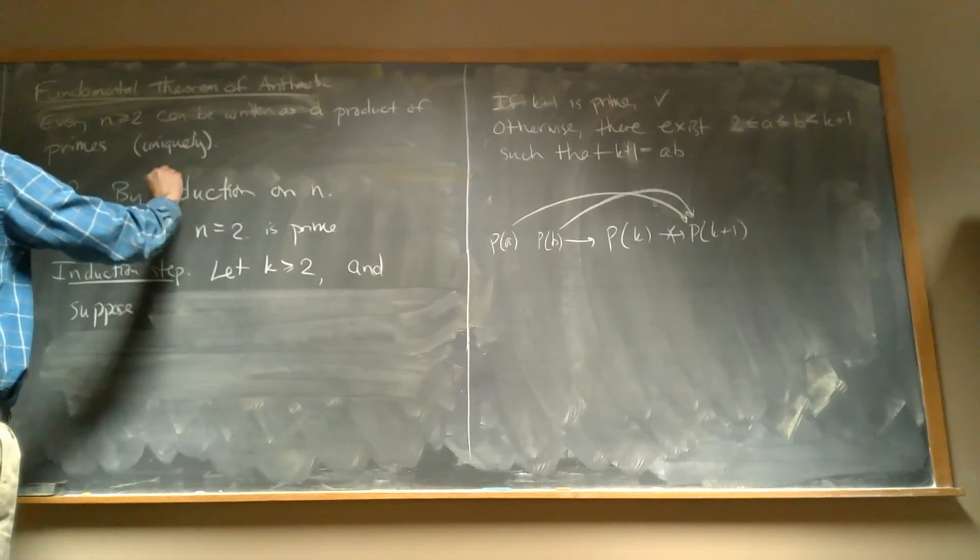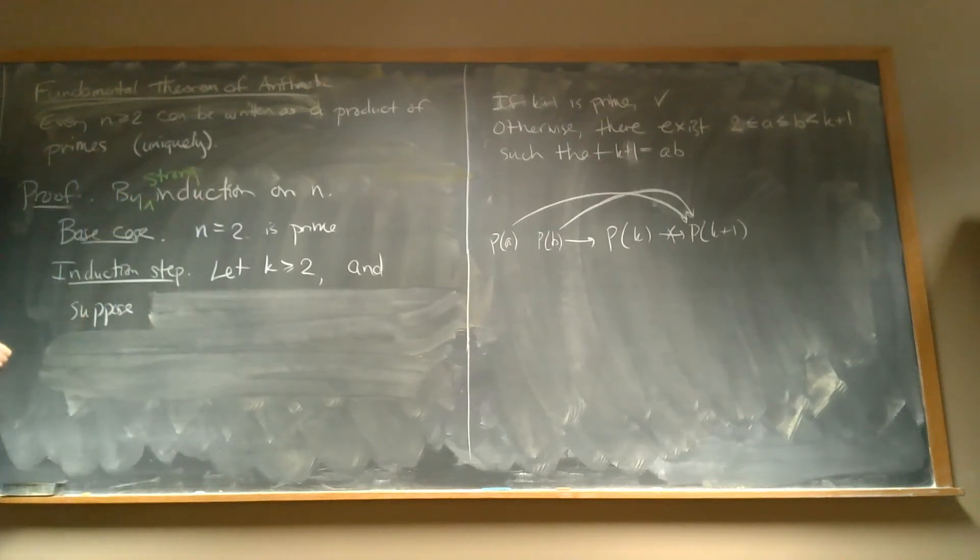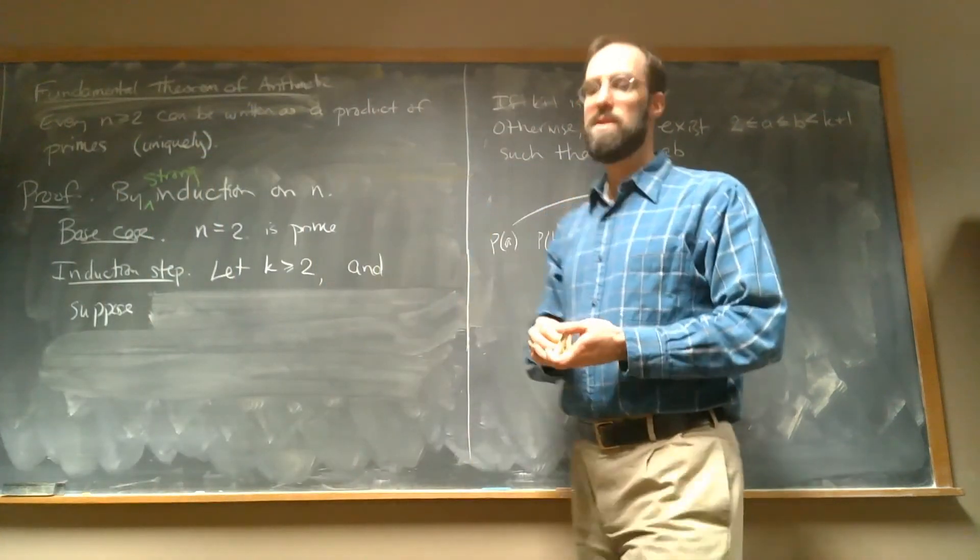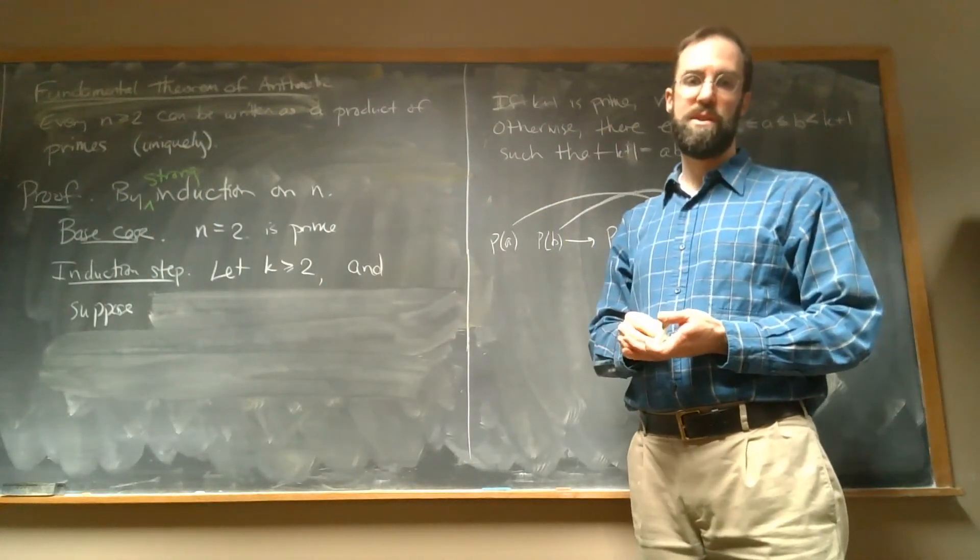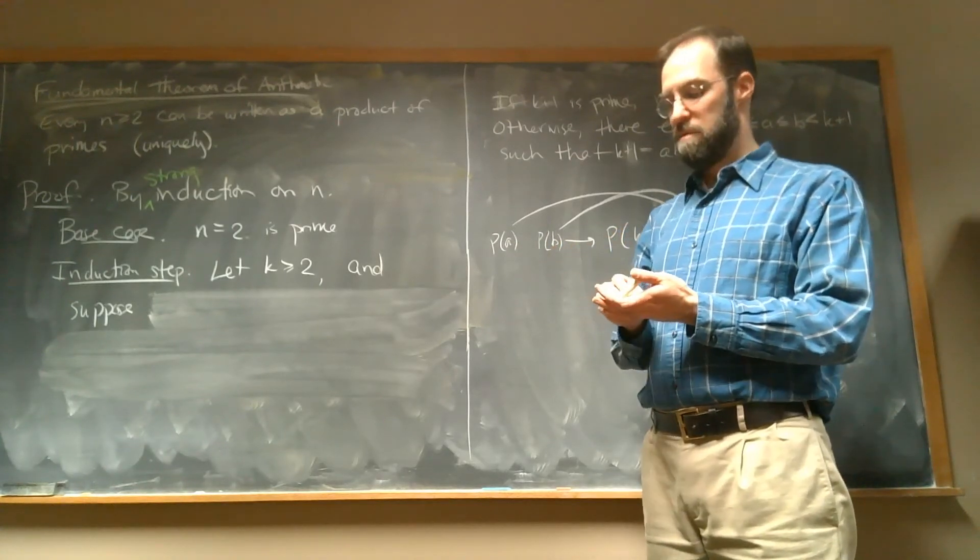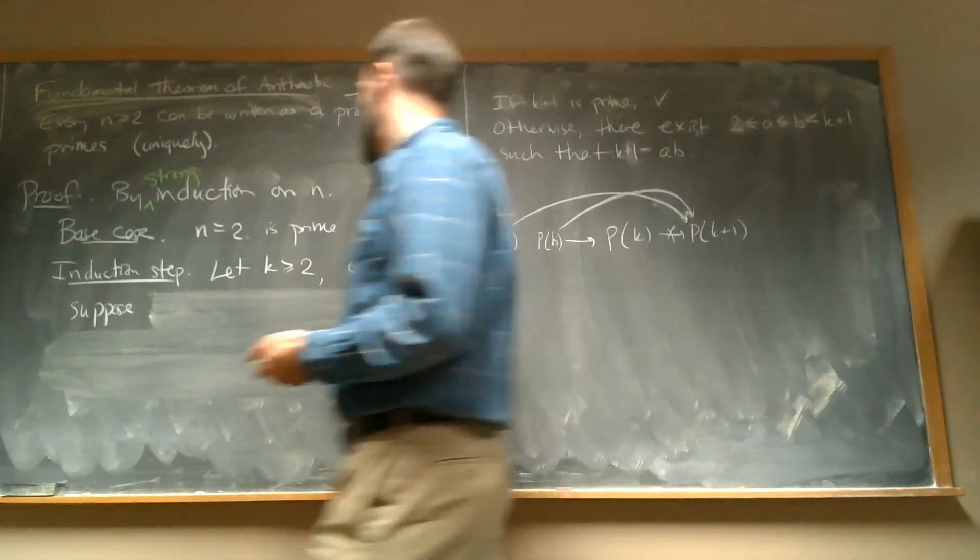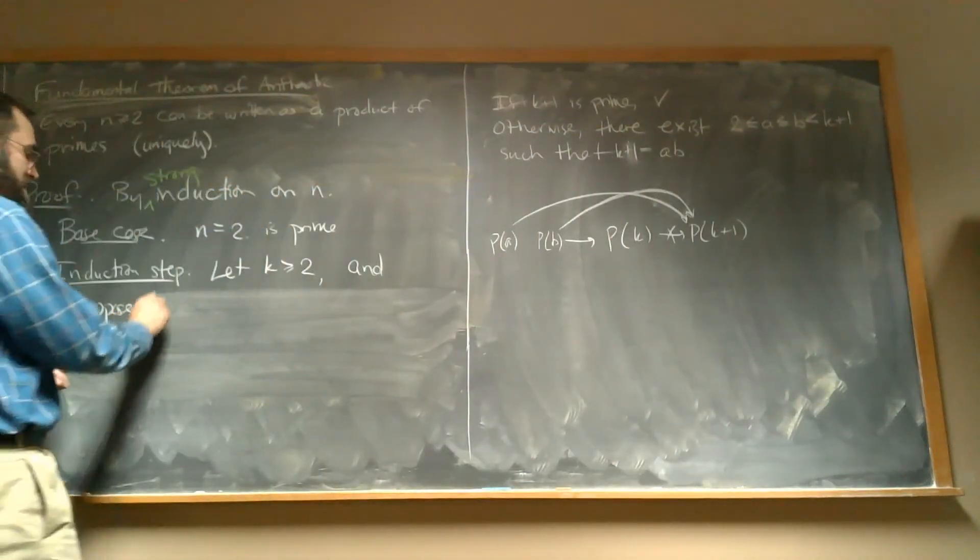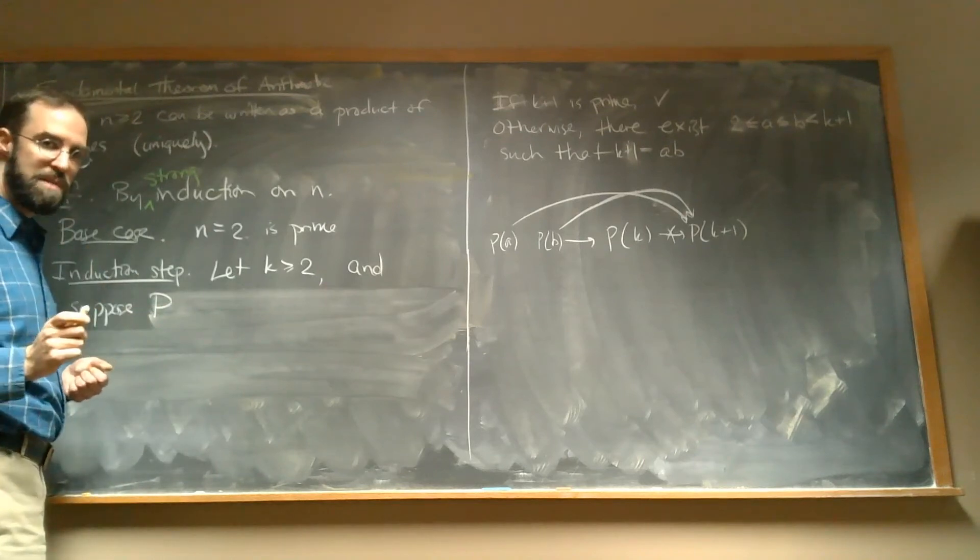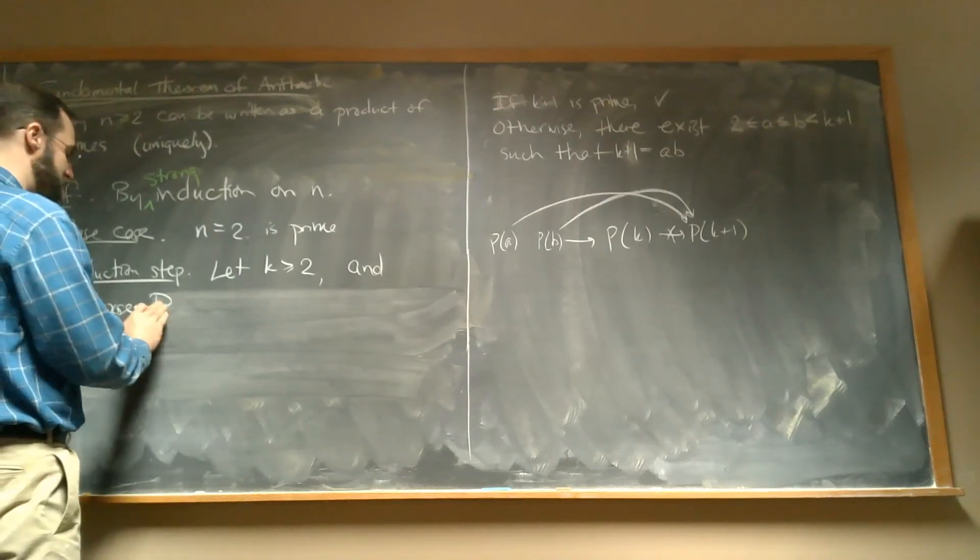So we're going to do a proof by strong induction on N. You don't necessarily have to say strong induction. It's helpful just to signal to the reader that you're using this type of induction. But, so suppose that, right now we're not just going to suppose that K can be written as a product of primes.